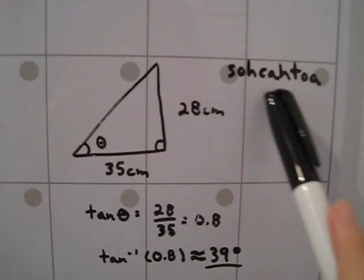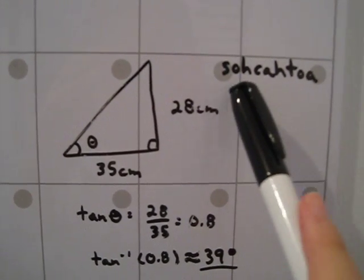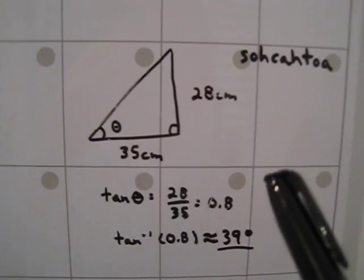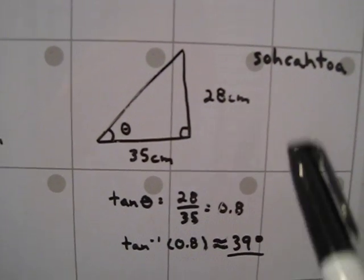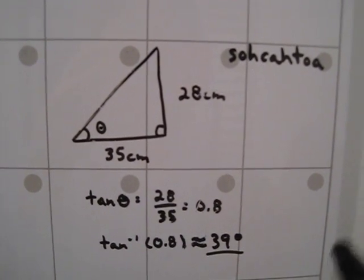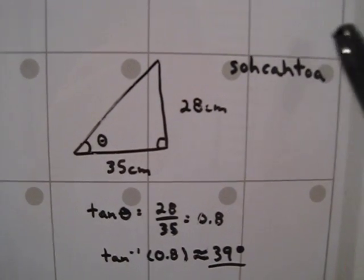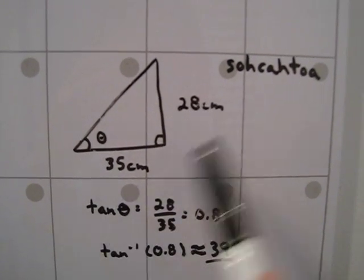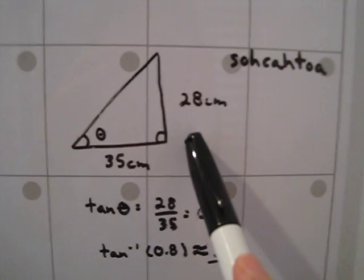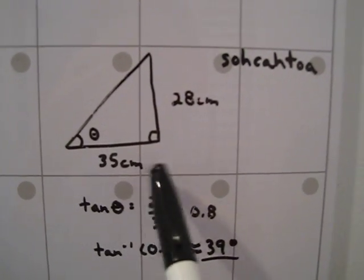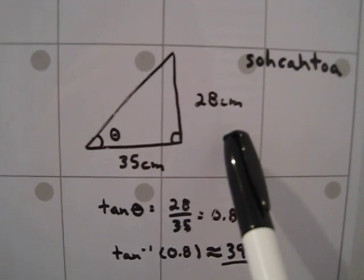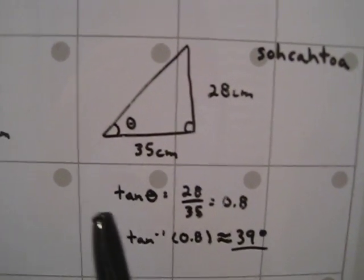So using SOHCAHTOA, this is just something that's been made up many years. You might have learned it when you learned trigonometry. It's easier to remember how to calculate sine, cosine, and tangent. We're going to use the TOA part. So the T is for tan. The O is for the opposite side of the angle, so the length of the opposite side of the angle. The A is for the adjacent side, so the length of the adjacent side. So using these two measurements, we can solve for the angle.